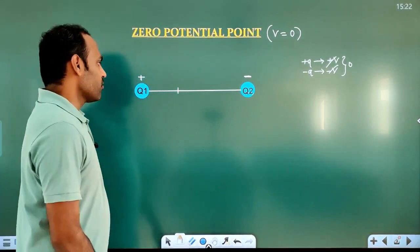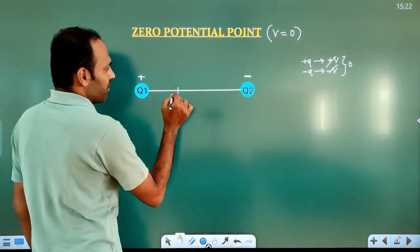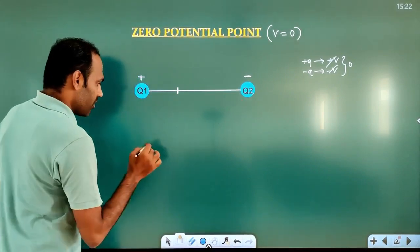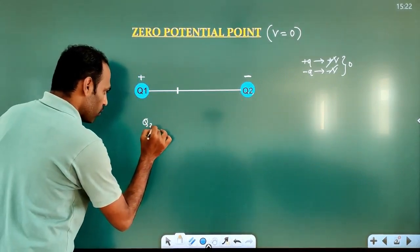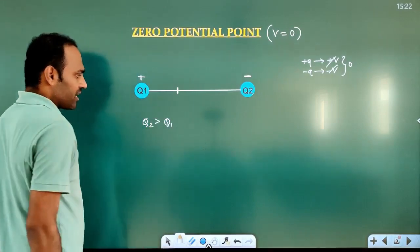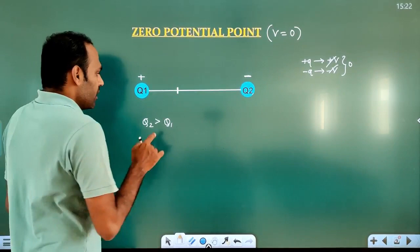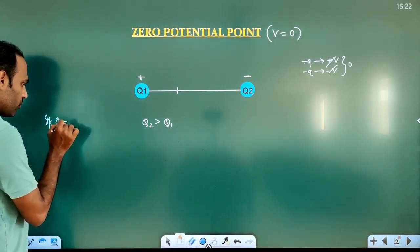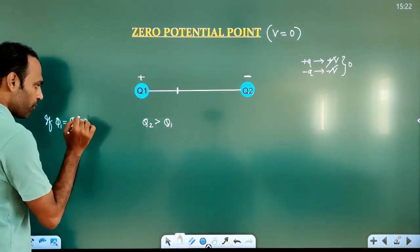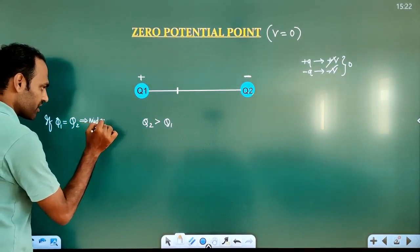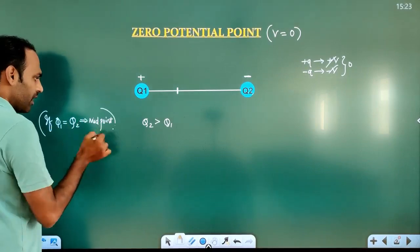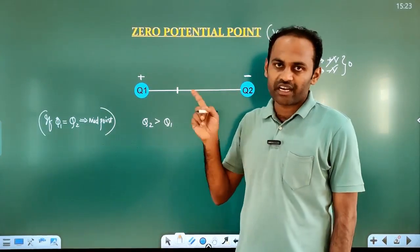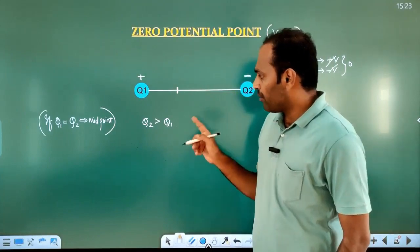So the first condition is: zero potential point exists only for unlike charges. The second condition is that among the two charges q1 and q2, they are not equal — let's say q2 is greater than q1. The zero potential point will not be at the midpoint of the straight line joining the two charges when they are unequal.